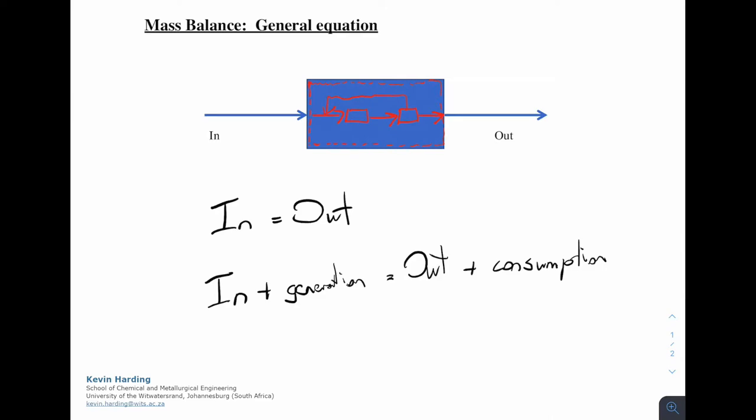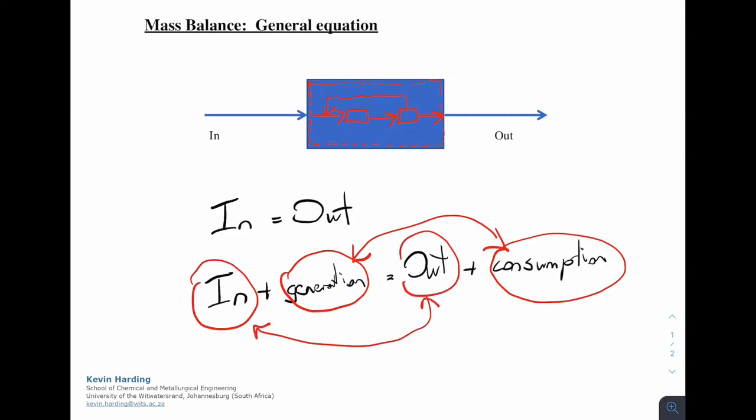What I want to do with this equation today is start grouping it and getting it into a better, more mathematical form. I want to take this generation term and this consumption term and lump the two together so that we don't have two terms and just have a change. The second thing I want to do is take the in and out terms and put them together on the same side of the equation. I'll put those on the right-hand side.